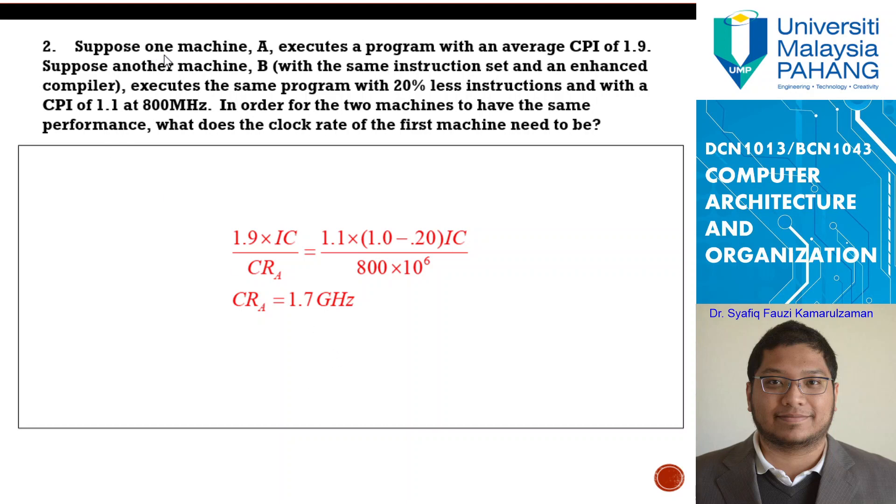From the question, suppose one machine A executes a program with an average CPI of 1.9. Here in this case, 1.9 cycle per instruction. Suppose another machine B with the same instruction set and an instance compiler execute the same program with 20% less instruction and with a CPI of 1.1 at 800 MHz. In order for the two machines to have the same performance, what does the clock rate of the first machine need to be?